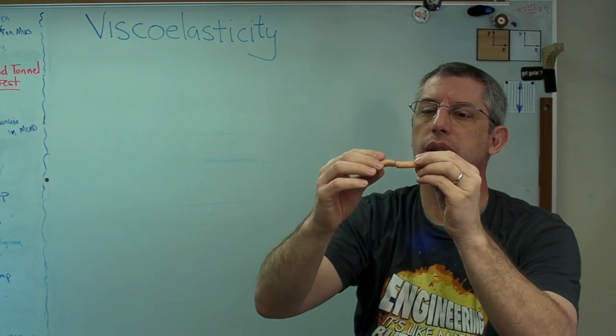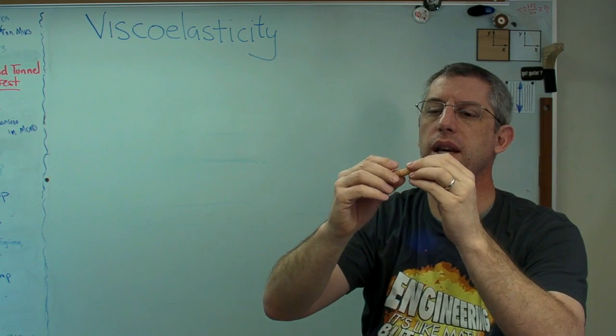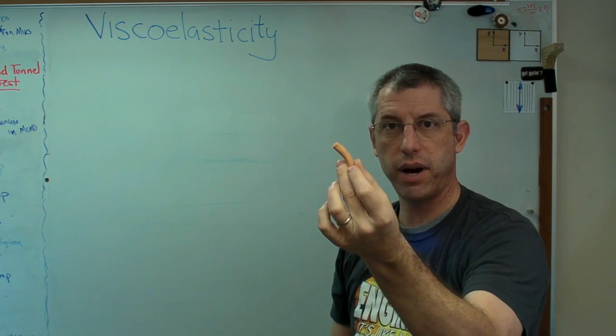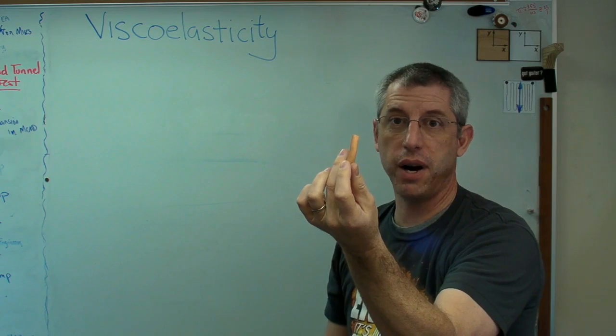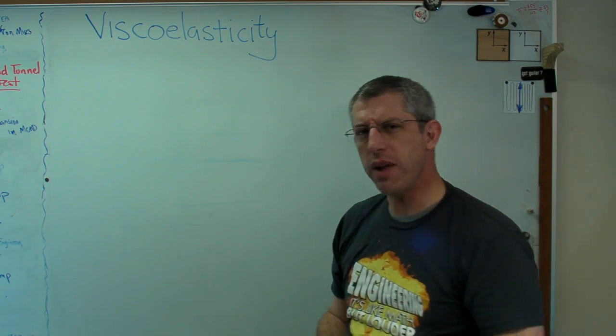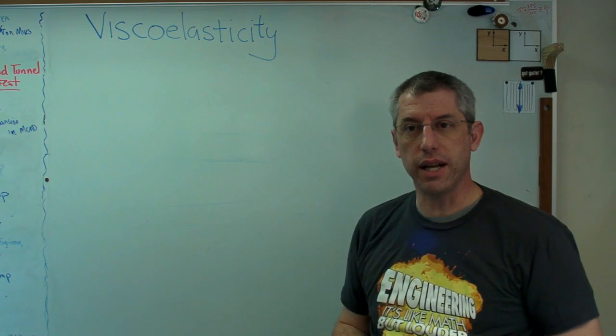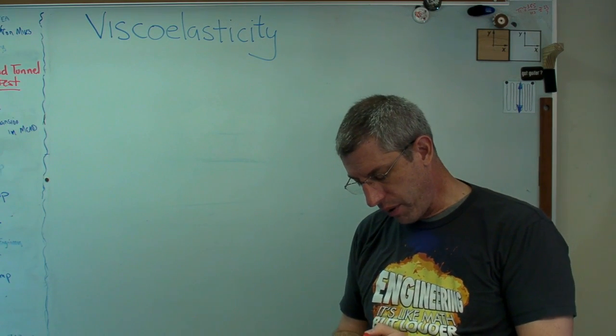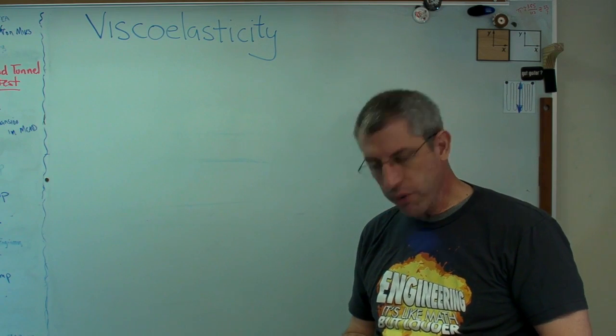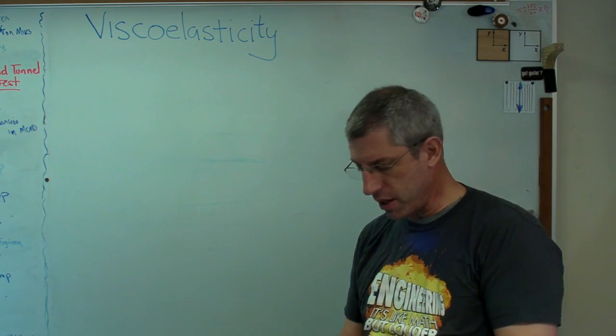Exact same piece of silly putty, same temperature, same everything. The only thing that changed was the rate at which I strained it and when I did that, see it shattered. I can even put this back together. It deformed plastically but it broke on a nice clean fracture line like that. That's fracture. It didn't do that when I stretched it slowly. That's viscoelasticity. There are lots of viscoelastic materials out there - plastics usually, but lots of other things too.